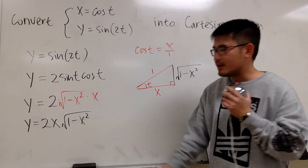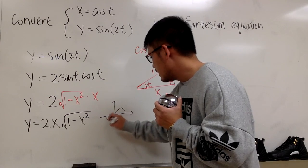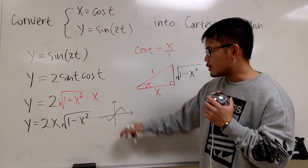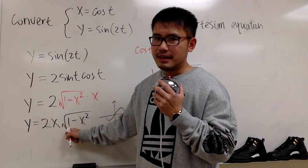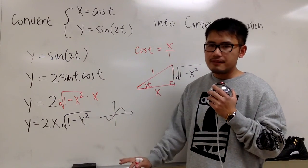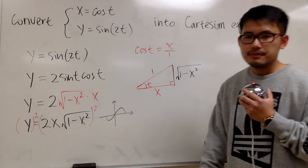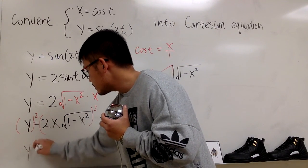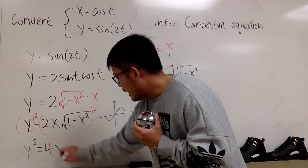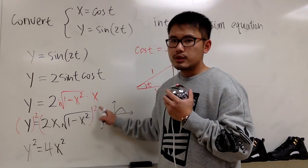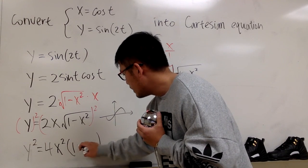However, if you graph this on a calculator, you'll see it gives you only part of the graph — not a full sine-like curve, just half of it. Because of the square root, we can only get half the graph. So let's square both sides. We get y squared equals 4 times x squared times (1 minus x squared), since the square root and the square cancel each other out.